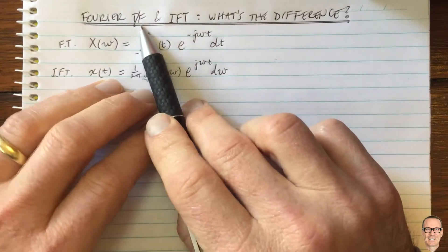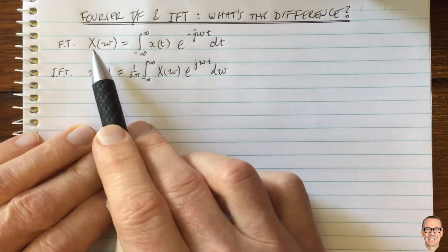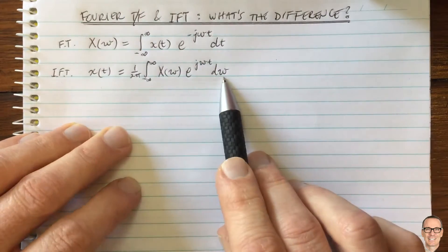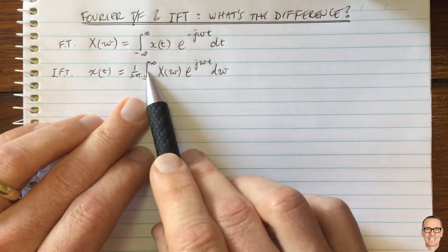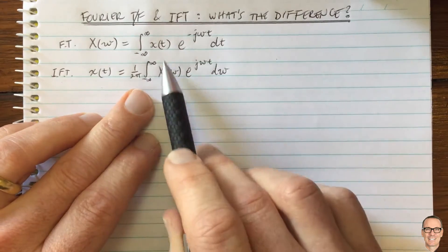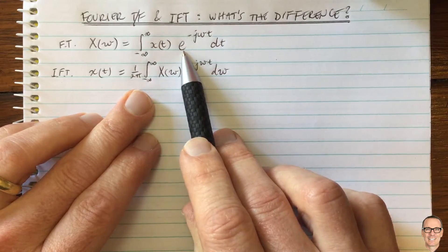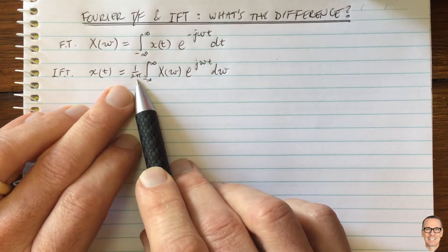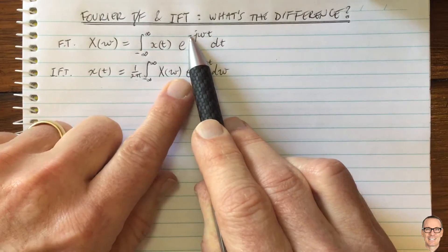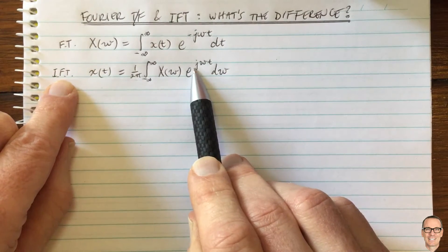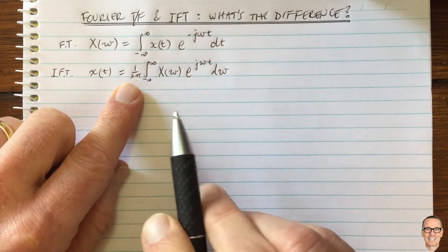What's the difference between the Fourier transform and the inverse Fourier transform? Here we've got the two equations: the Fourier transform and the inverse Fourier transform. Already we can see they look very similar. They both are integrals from negative infinity to infinity of a function multiplied by an exponential. There's a scaling of 1 over 2π for the inverse Fourier transform, and a negative sign in the Fourier transform but not in the inverse. But apart from that, they look very similar. So what is the difference?